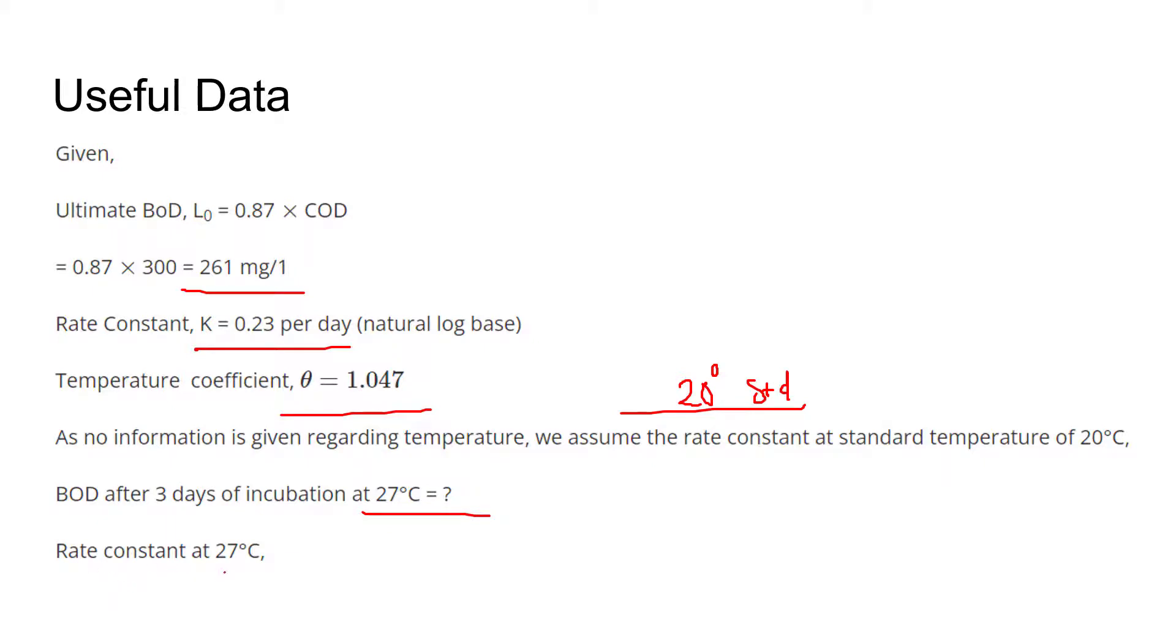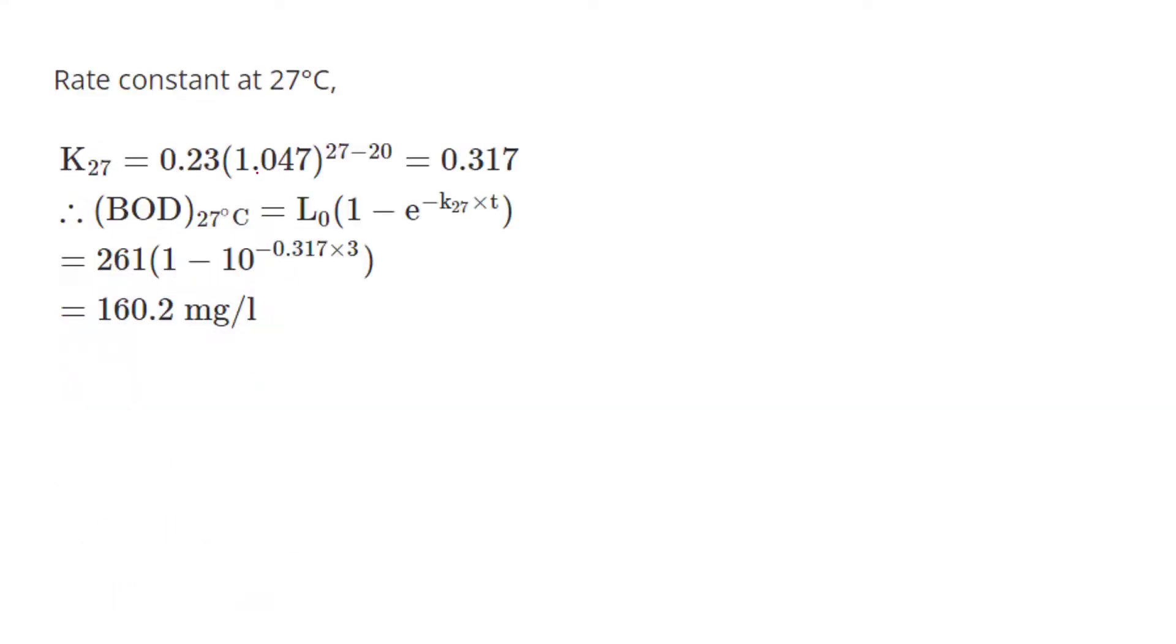we need to calculate the rate constant at 27 degrees Celsius. So K₂₇ = 0.23(1.047)^(27-20) = 0.317. Therefore, using the BOD formula, (BOD)₂₇°C at 3 days = 261(1 - e^(-0.317×3)) = 160.2 mg per liter.